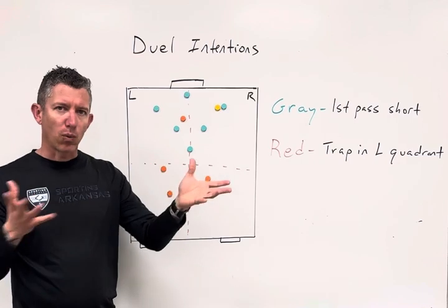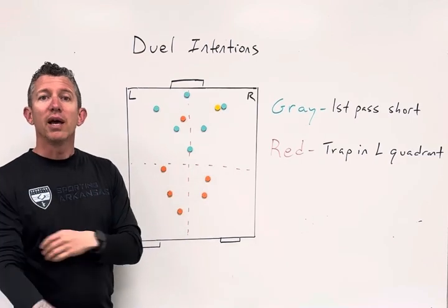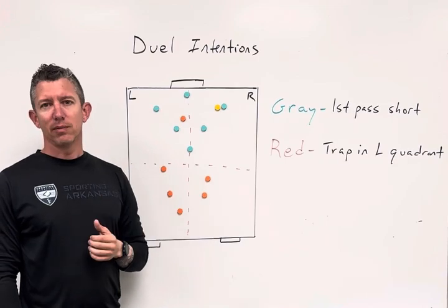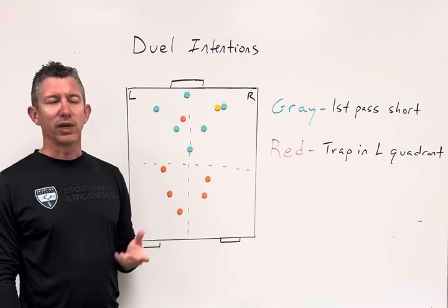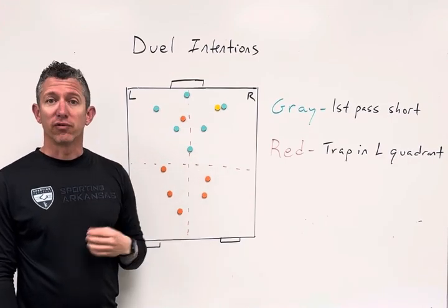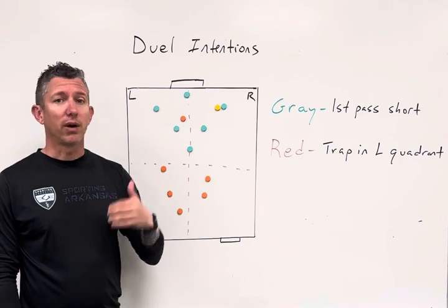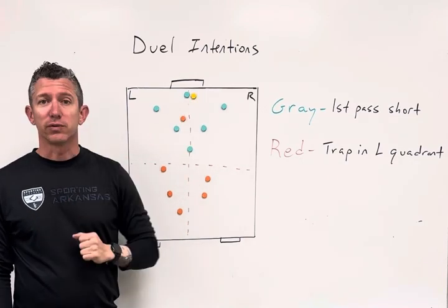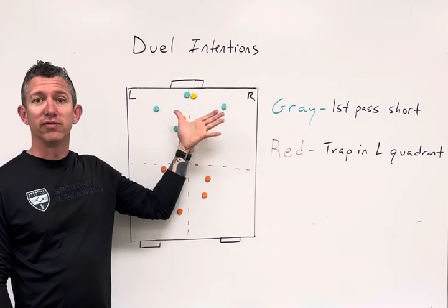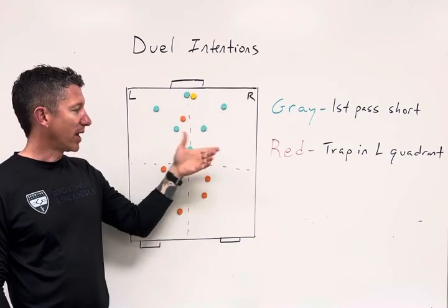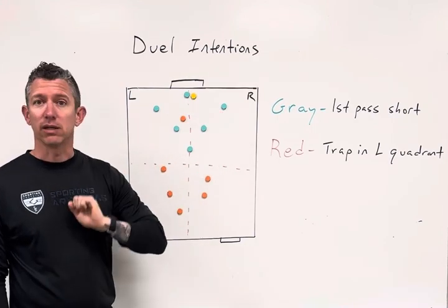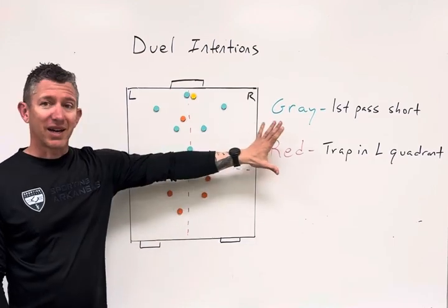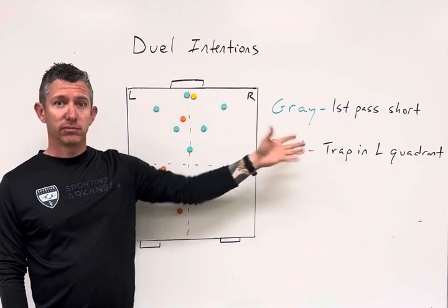We're going to start the game and play 7v7 with no restrictions for a few minutes, watching how things develop. Then I'm going to go to the Blue team — most likely the more defensive players — and say: for the next 10 minutes, every time the ball goes out it starts back with the goalkeeper, and your first pass has to be into the defensive half. You can't play past that line. That's it — nothing else. Your first ball has to be short.